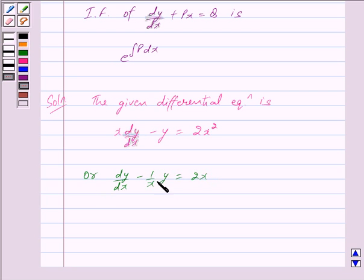By comparing this equation with the key idea dy/dx + px = q, we can clearly see that p = -1/x. So, here we have p = -1/x.